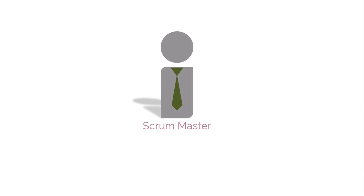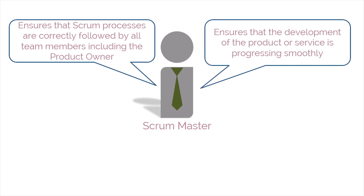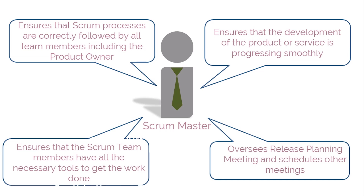The next core role we'll discuss is the Scrum Master. He or she ensures that the Scrum processes are correctly followed by all team members, including the product owner, and that the development of the product or service is progressing smoothly, and that the Scrum team members have all the necessary tools to get the necessary work done. He or she also oversees the release planning meeting and schedules other meetings.